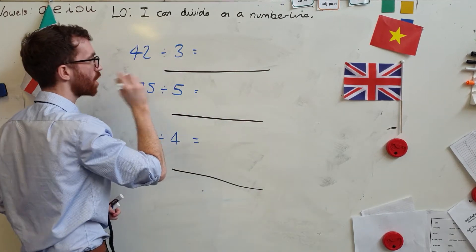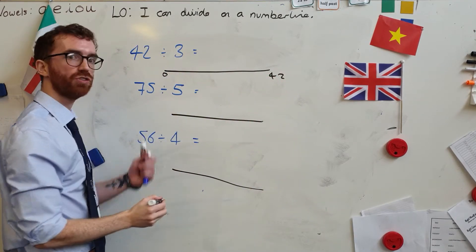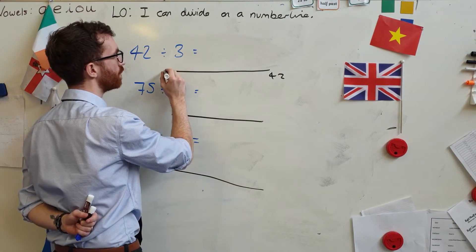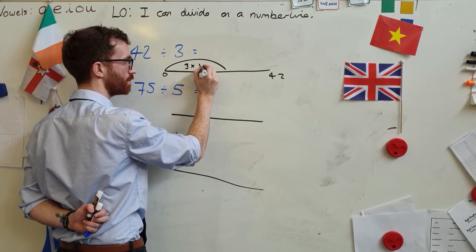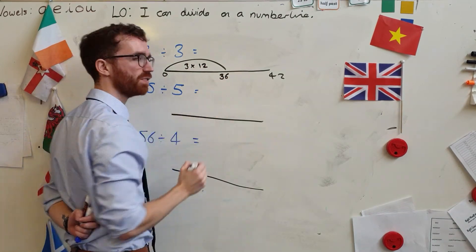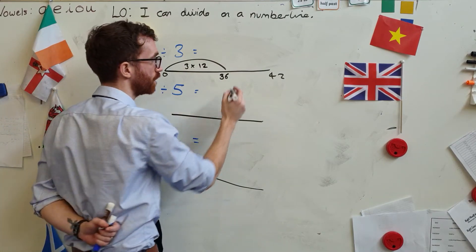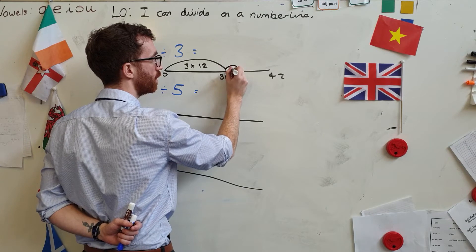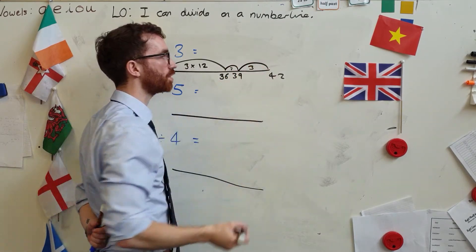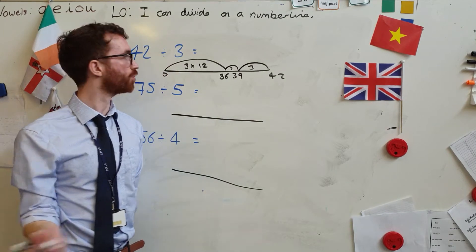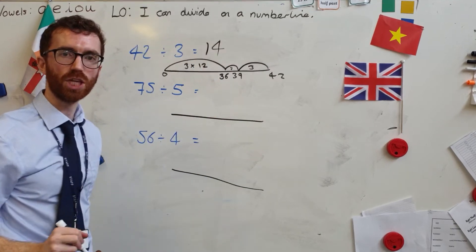Zero to 42 — my job is to find out how many threes in 42. I know that three times 12 is 36, so I've got that bit already. Now I'm going to jump on in threes: one three gets me to 39, another three gets me to 42. How many threes were there? Twelve, thirteen, fourteen. The answer should be fourteen.